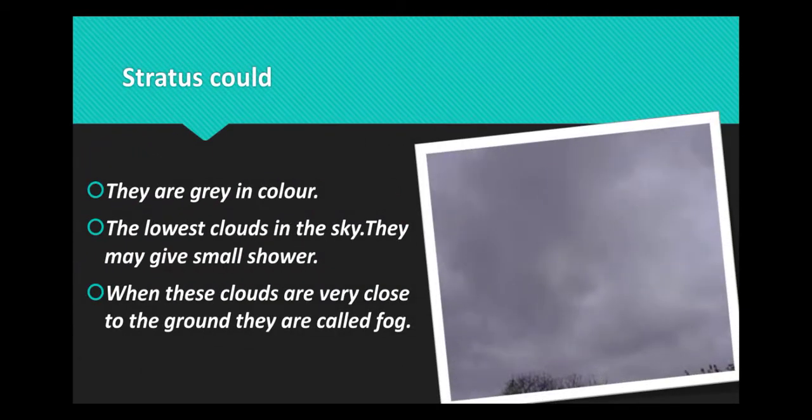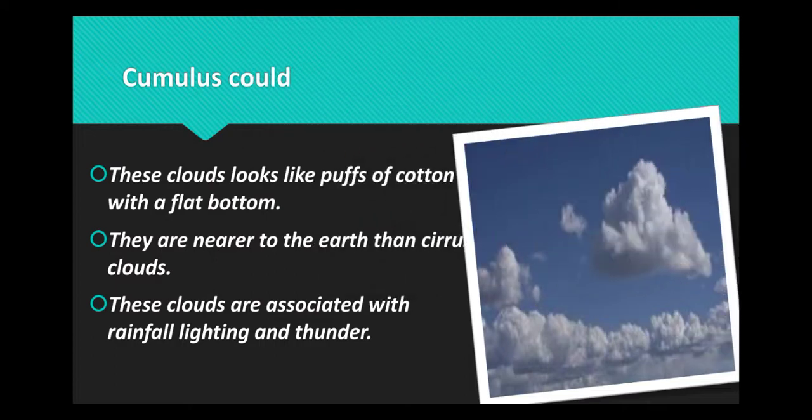Stratus clouds may give a small shower. When these clouds are very close to the ground, they are called fog. Cumulus clouds look like puffs of cotton with a flat bottom. They are nearer to the earth than cirrus clouds.